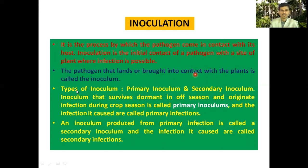There are two types of inoculum: primary inoculum and secondary inoculum. Primary inoculum is the inoculum that survives dormant in the off season and originates infection during the crop season; the infection caused by it is called primary infection. An inoculum produced from primary infection is called secondary inoculum, and the resulting infection is called secondary infection.